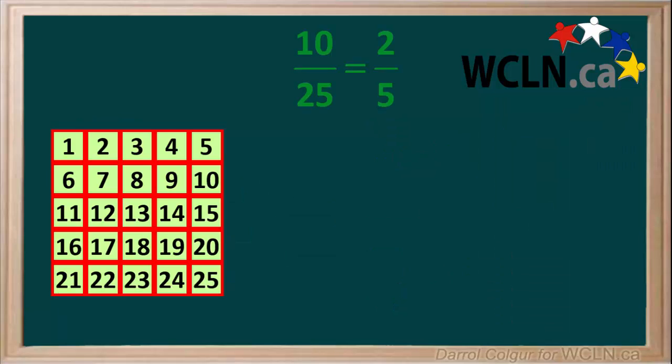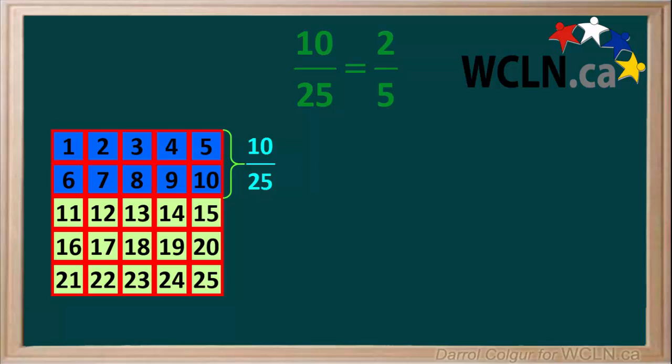We can see how these two fractions are the same by drawing a diagram with 25 squares put together to form a large square. We'll color 10 of the 25 little squares blue. So we can say that 10 25ths of the large square is made up of blue squares.